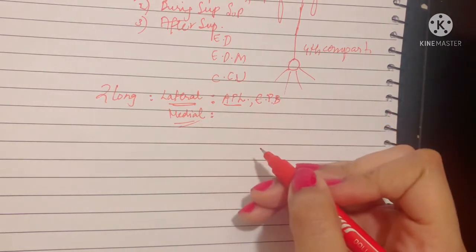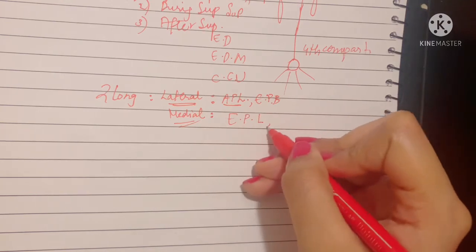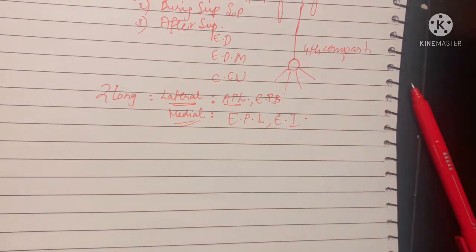The medial branch supplies the ones that are left, the extensor pollicis longus and the extensor indicis. Apart from this, it gives articular branches to the wrist joint and the distal radioulnar joint, and sensory branches to the interosseous membrane, the radius and ulna.